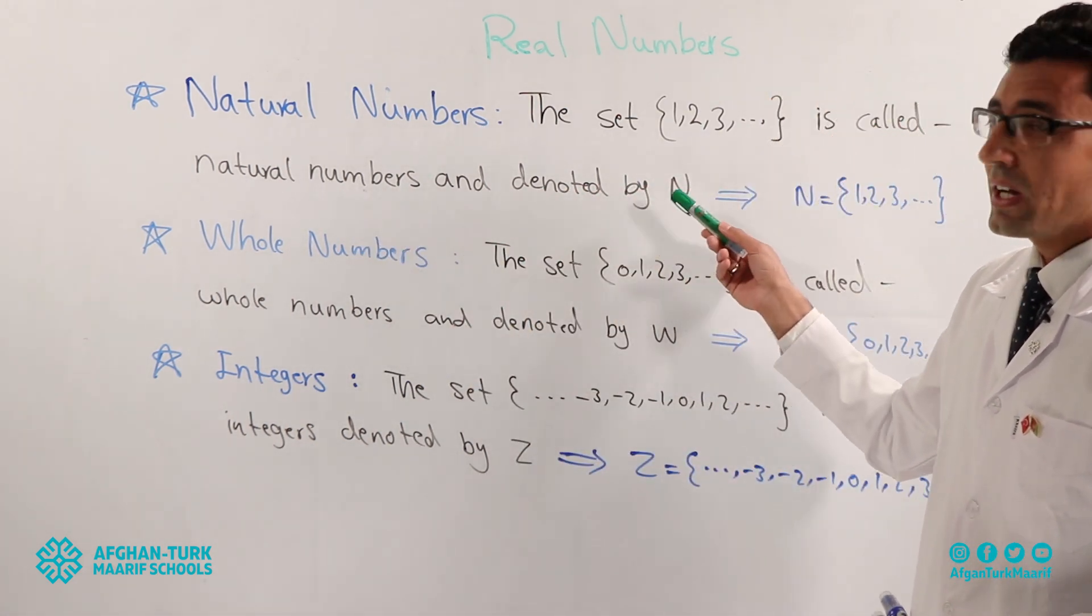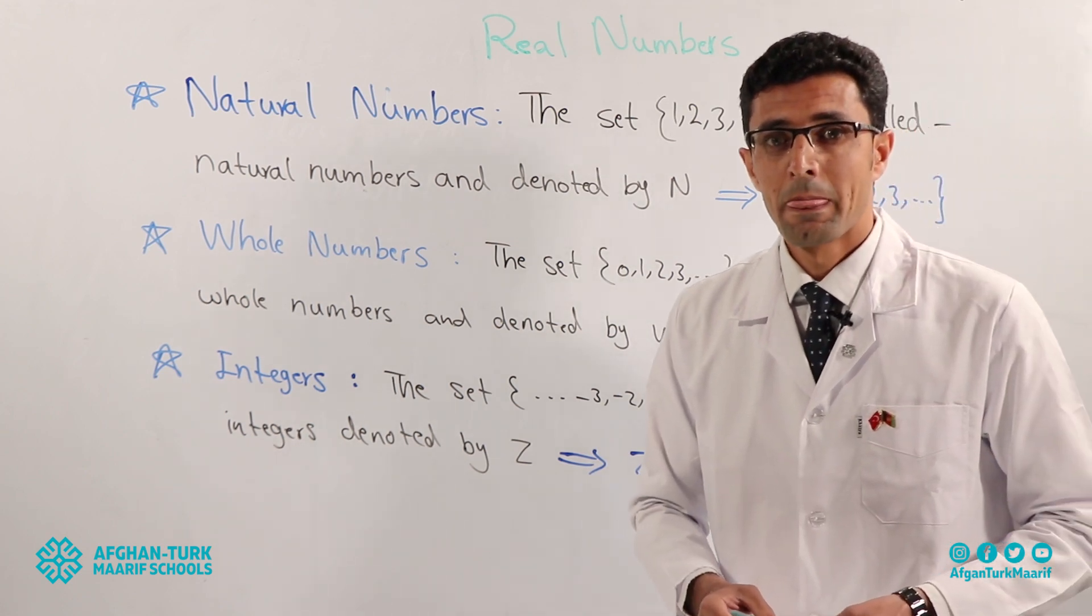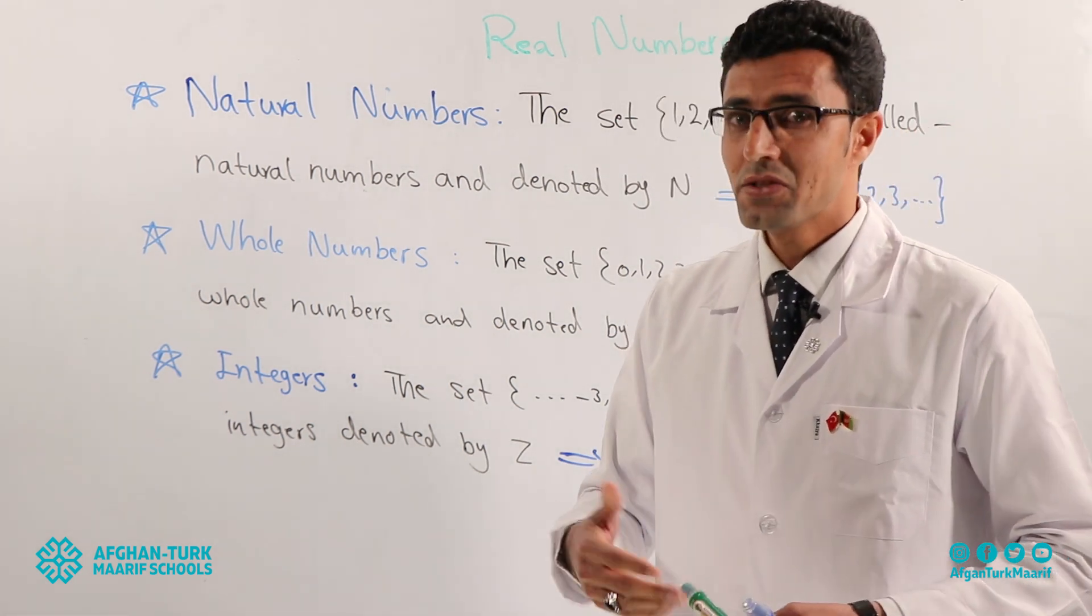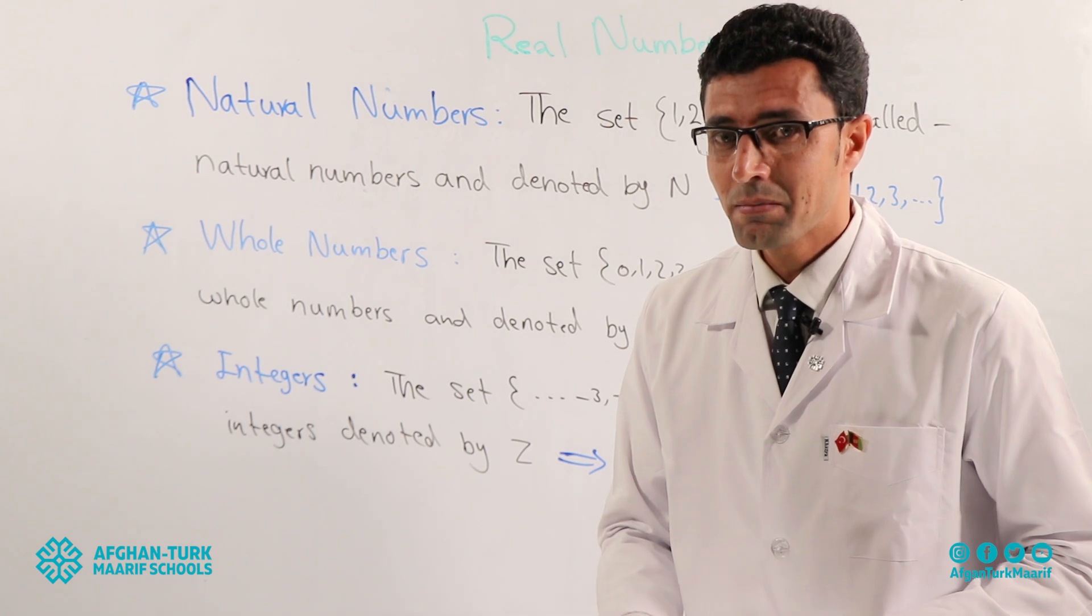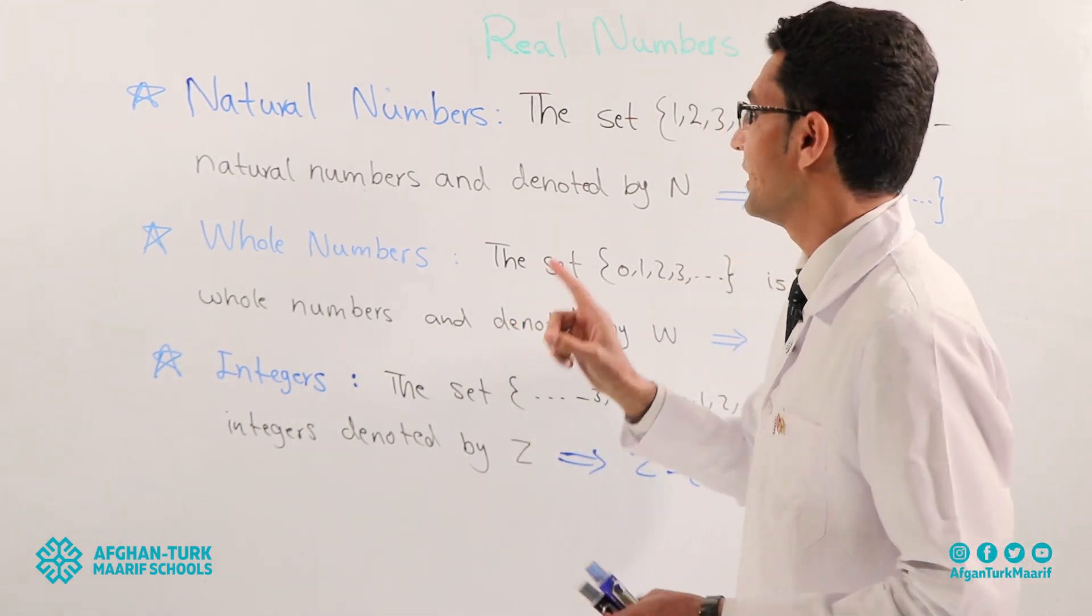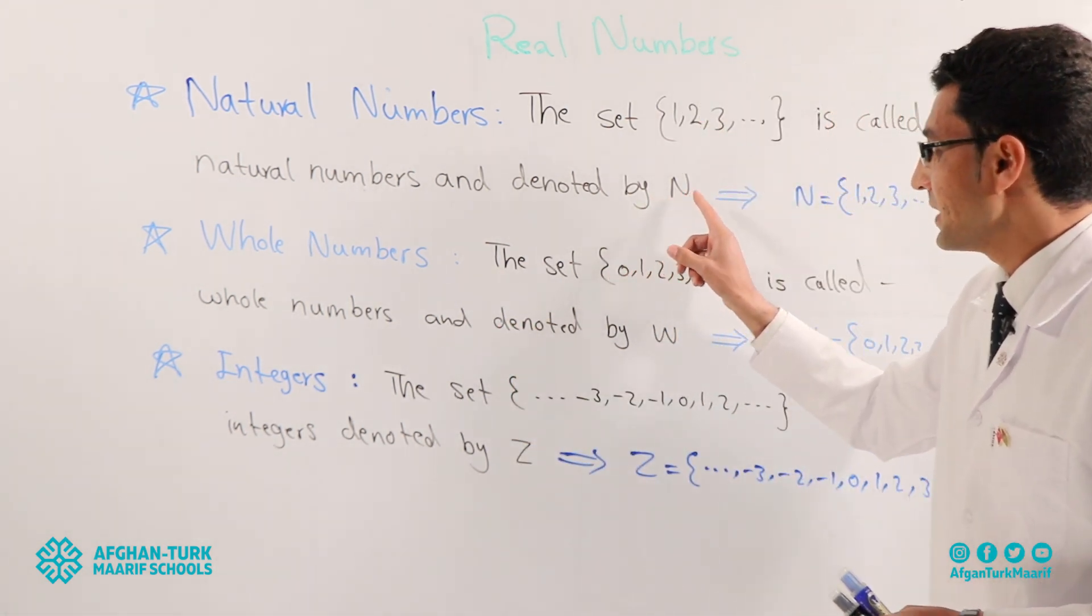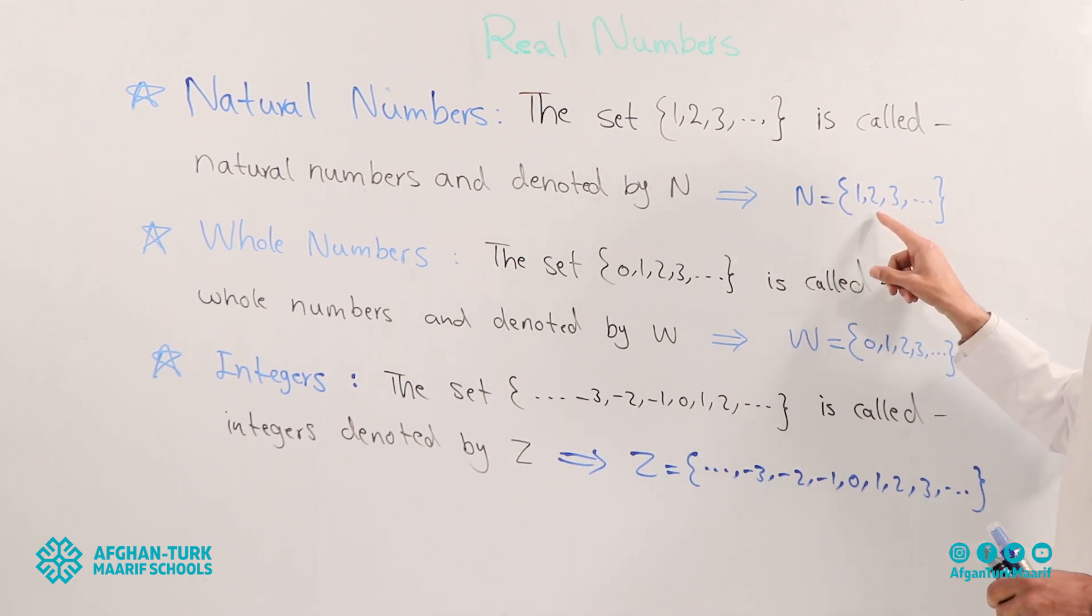And denoted by what? By N. What does denoted mean? It means show. Natural number shows by what? By N. It means N is equal to one, two, three dot dot.